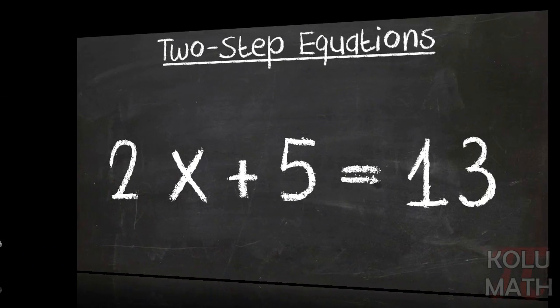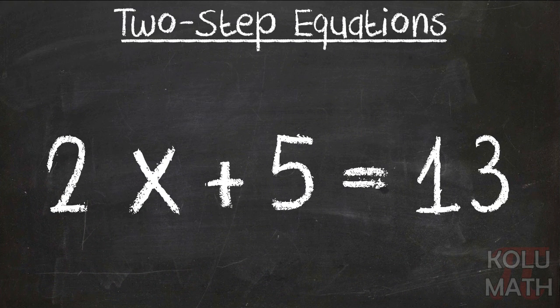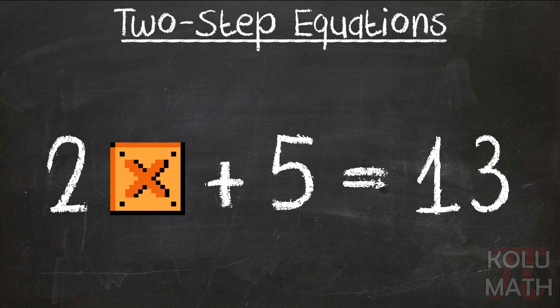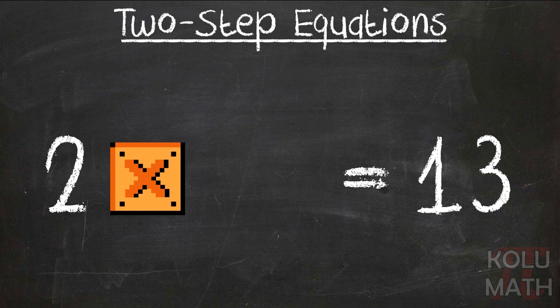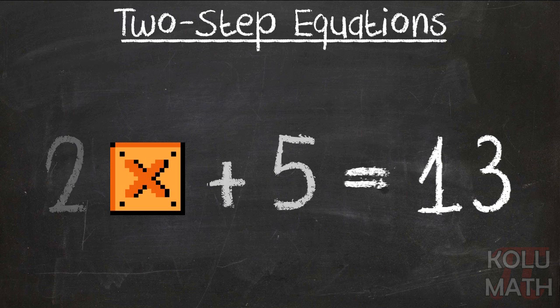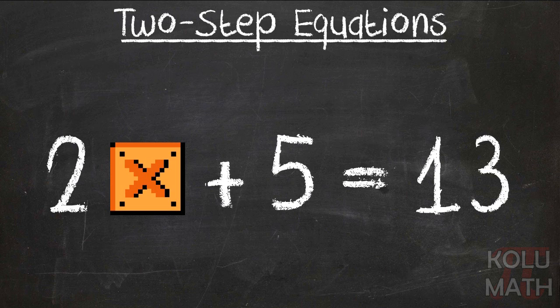Okay, so let's take a look at an example. We've got 2x plus 5 equals 13. And this looks a little different than the problems we looked at last time, right? Last time we might have seen a problem like this, or we might have seen a problem like this. But it almost looks like they took those two problems and mashed them together, and we're going to solve them, kind of treating them in that way.